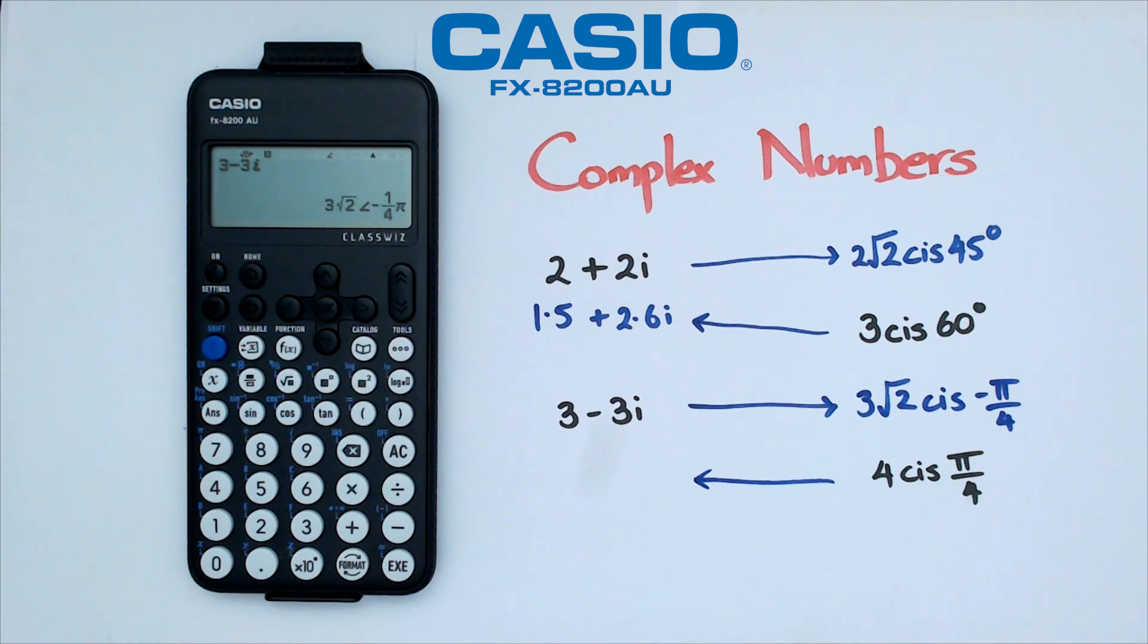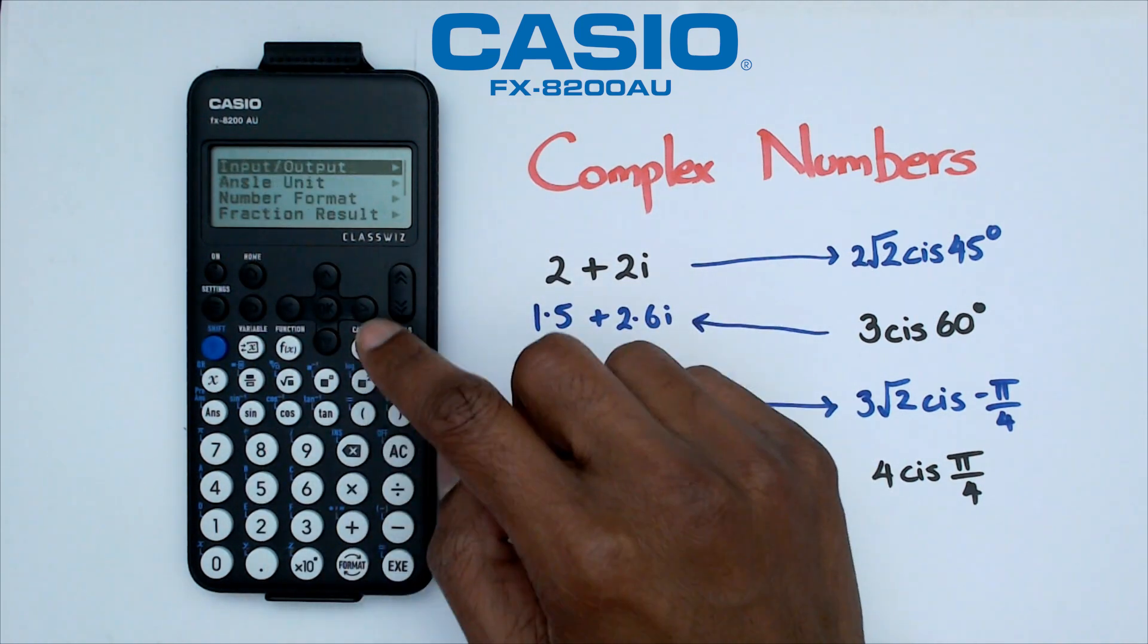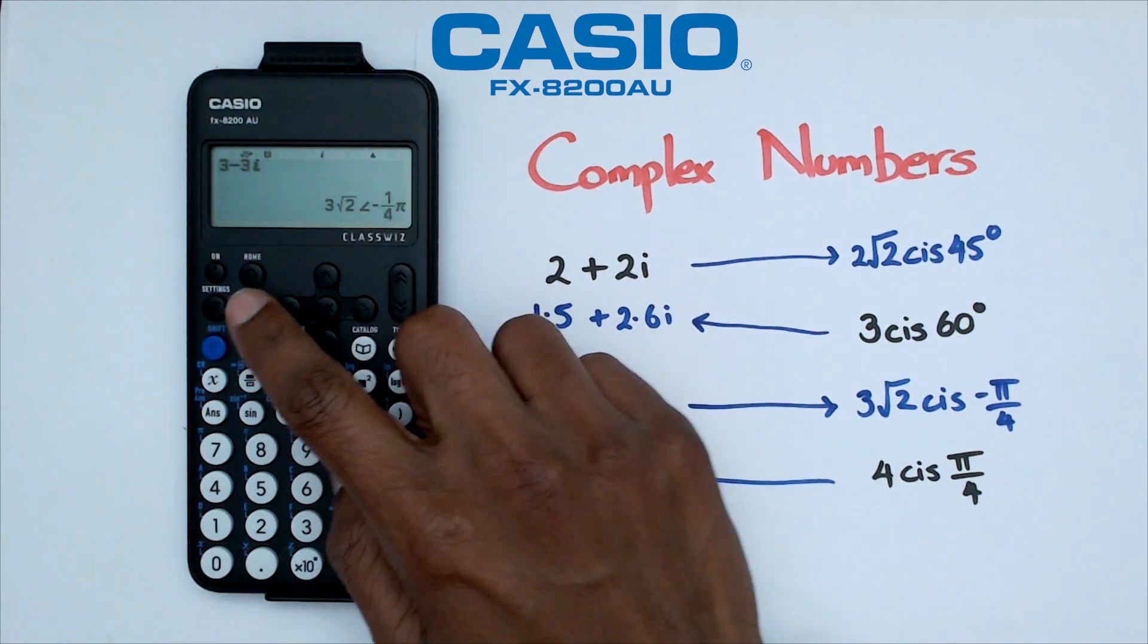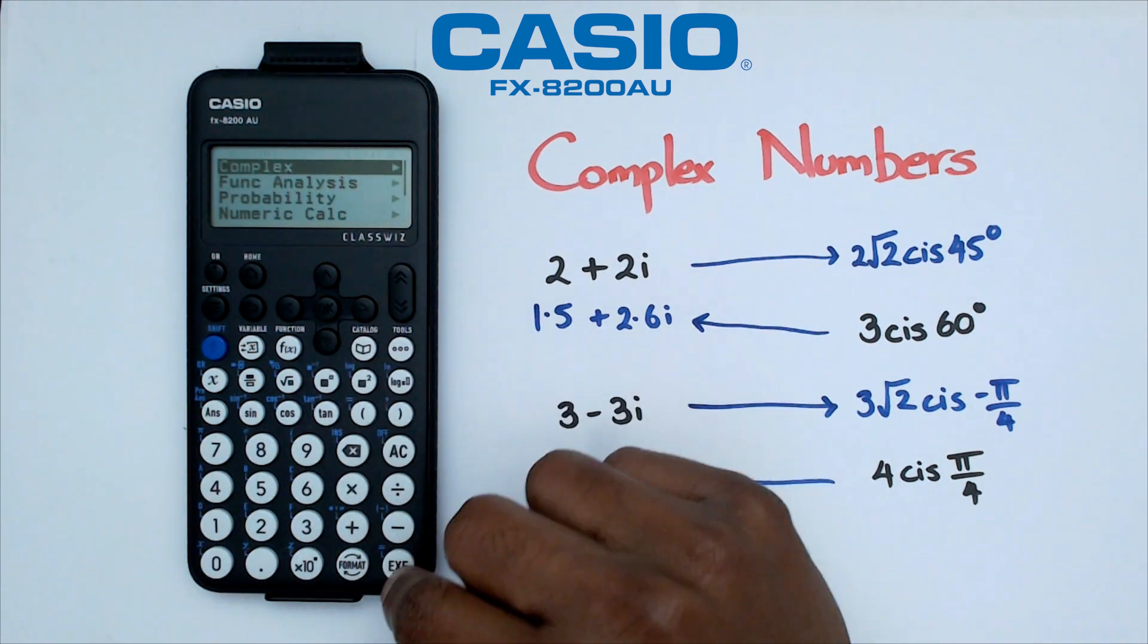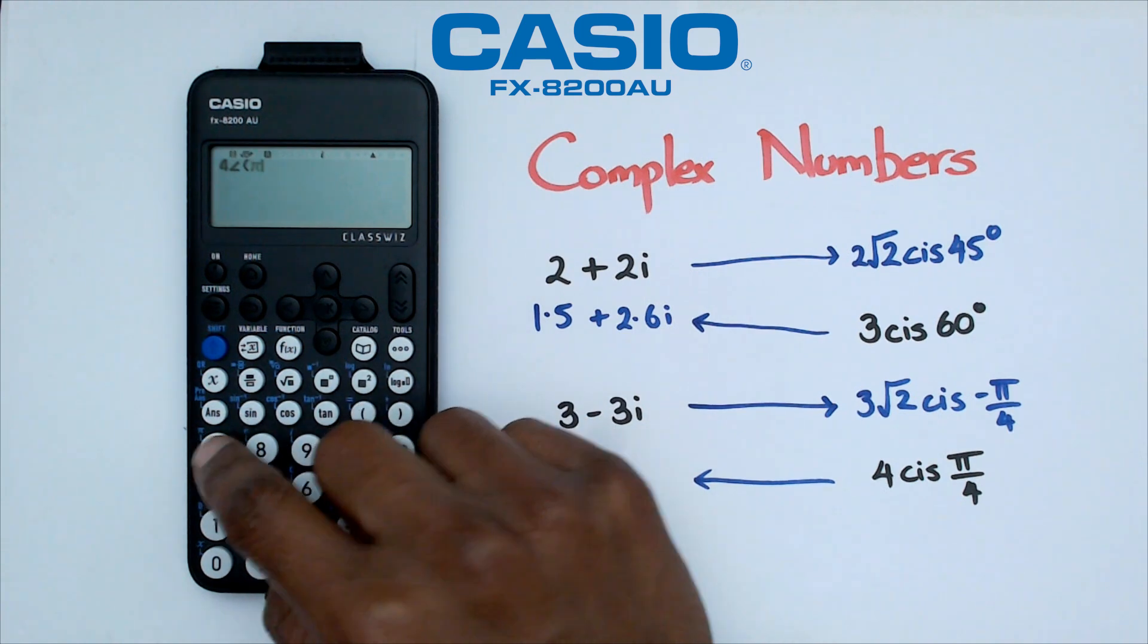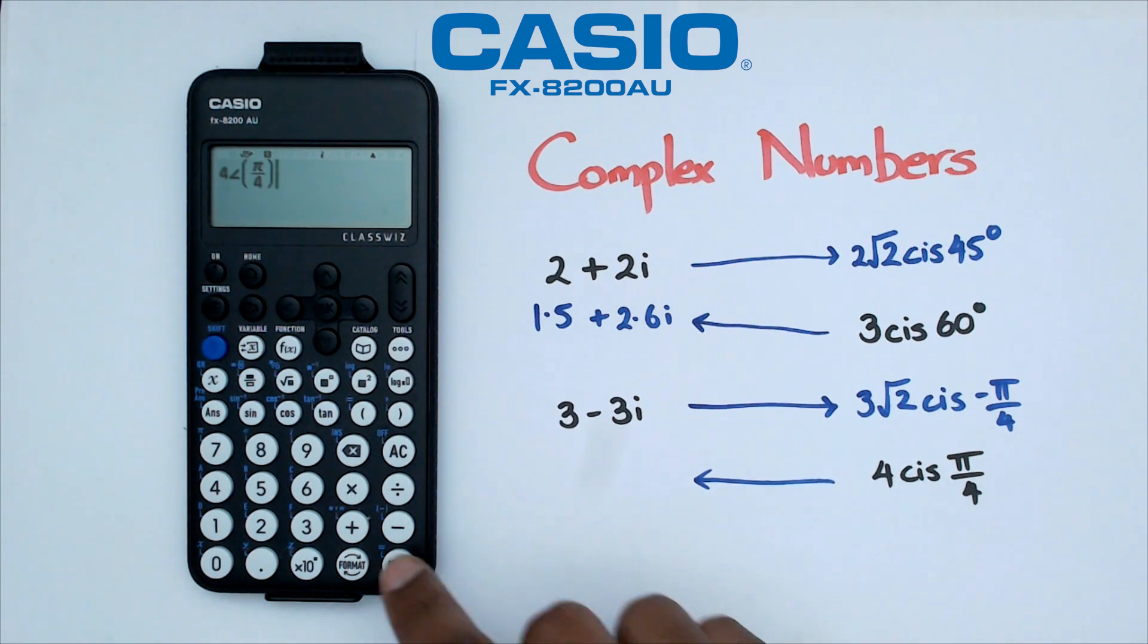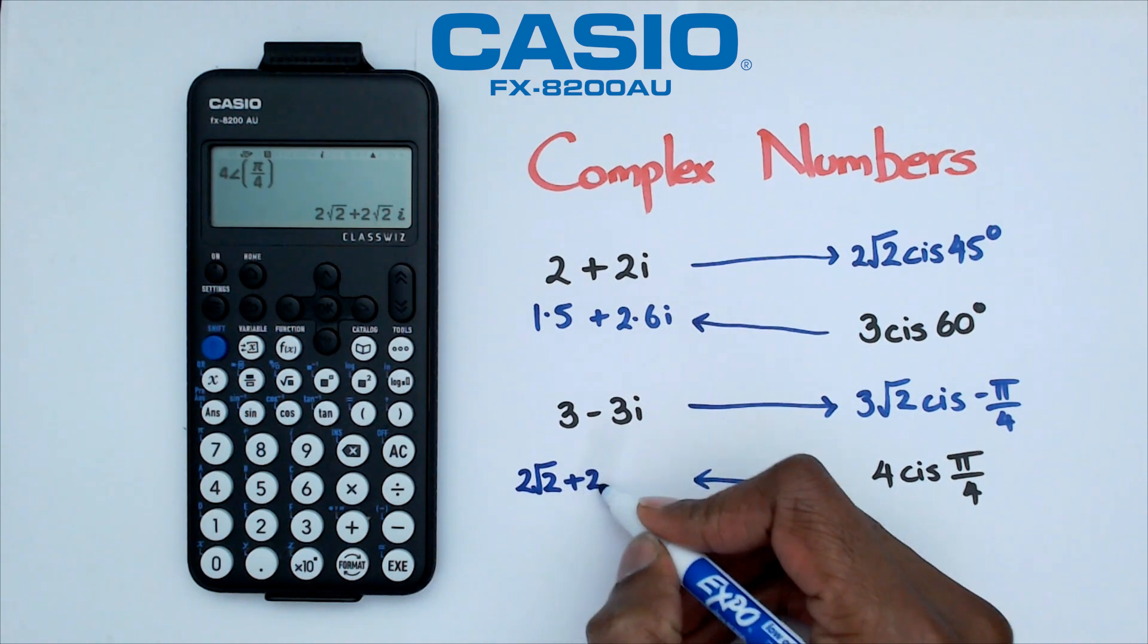And for the last question, we've got 4 cis pi over 4. And we want to actually convert this to rectangular form. So what I need to do is make sure that my calculator settings for complex is in rectangle form. Now I'm going to go back to my main page, and I've got 4 cis. Now to get the cis button, we need to go to catalog, complex, and you would find that little arrow, which is the cis button. And we've got pi over 4. So I'm going to put that in brackets there. Shift pi over 4. There we go. So that's 4 cis pi over 4. And when I press equals, I am going to get 2 root 2 plus 2 root 2i.